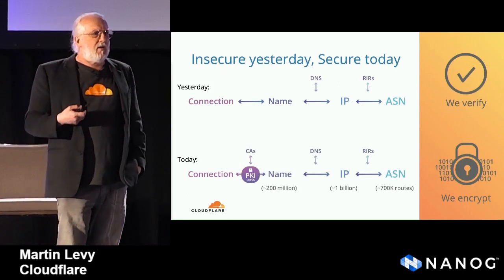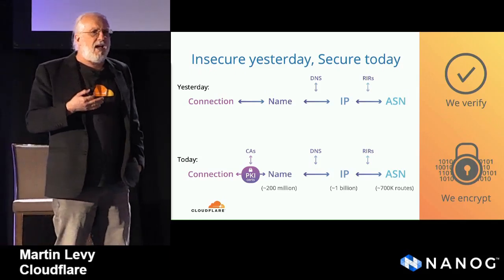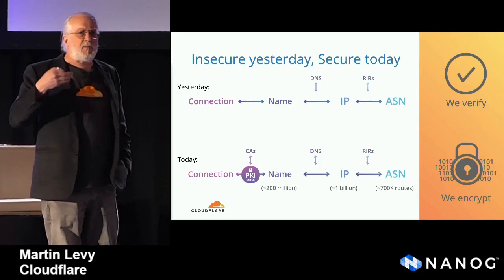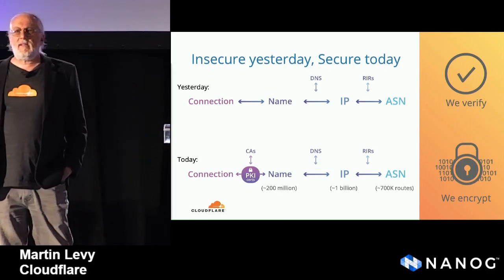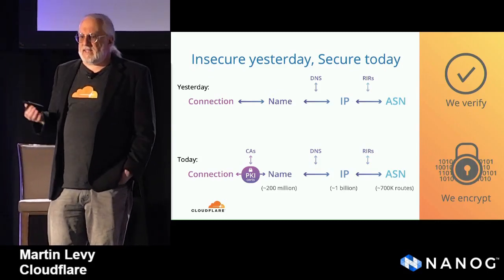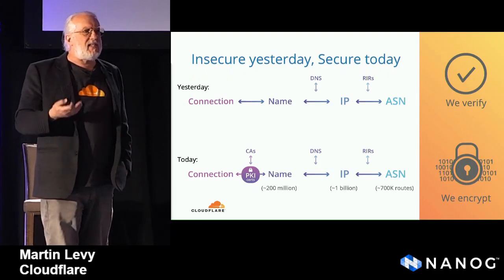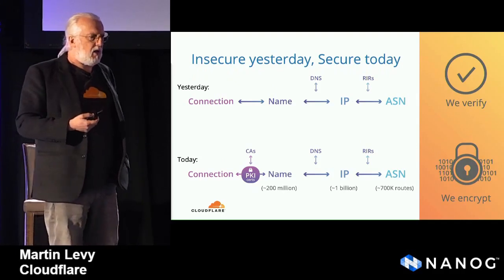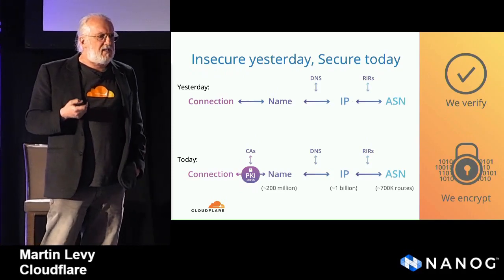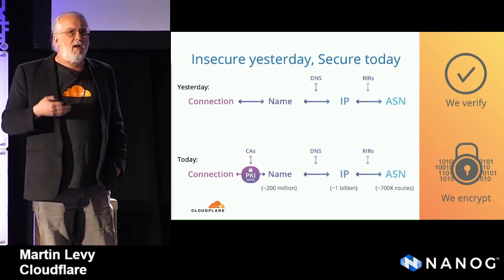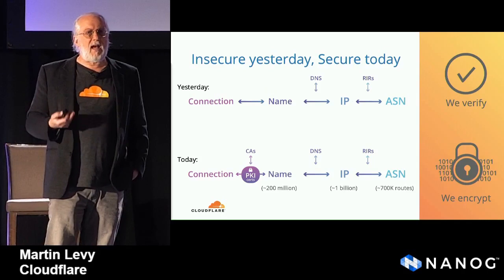This diagram simply says we used to have a connection that needed a name, converted via DNS to an IP, which ran through a routing table with an ASN. These days we have names and DNSSEC, CAs for TLS-style connections, RIRs and RPKI for ASNs and IPs. We are in a different world — we deal with encryption as the norm — and yet this talk is going to talk about the lack of that at the routing level.